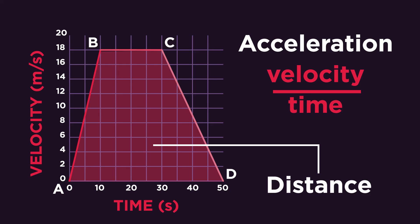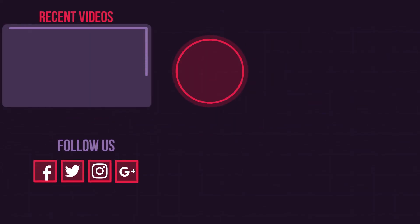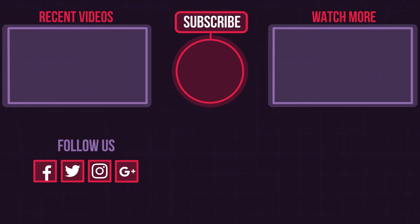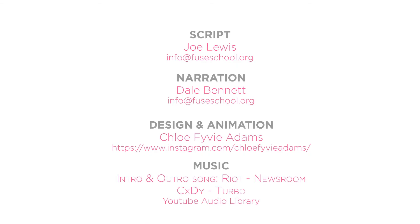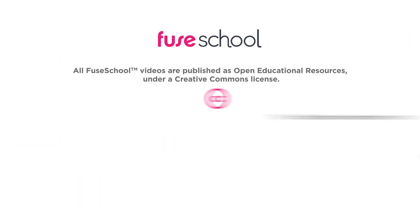So there you have a quick guide to finding acceleration and distance traveled using a velocity-time graph. If you liked the video, give it a thumbs up and don't forget to subscribe. Comment below if you have any questions. Why not check out our Few School app as well? Until next time.